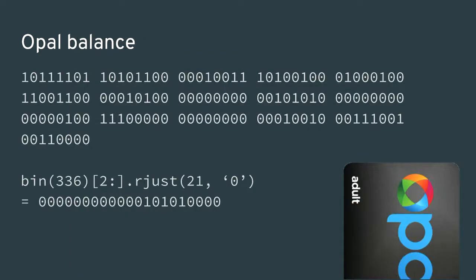The balance was more of a challenge because the balance in cents doesn't appear anywhere in a byte-aligned way. I converted the file to a long binary string and converted the balance of 336 cents to binary as well. I found the balance stored in bits 54 through 75. I also wrote a small Python script to automate this process and try a few different encoding methods, and that's now in the MetroDroid source repository.